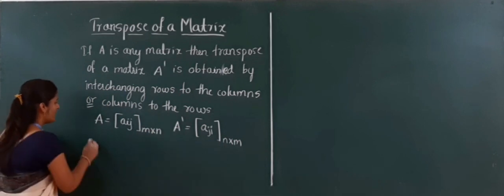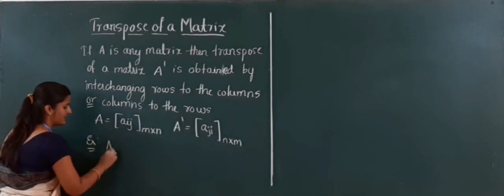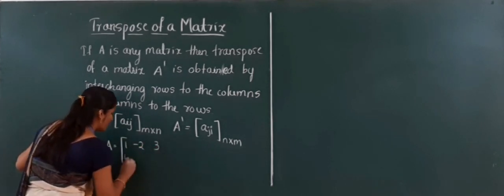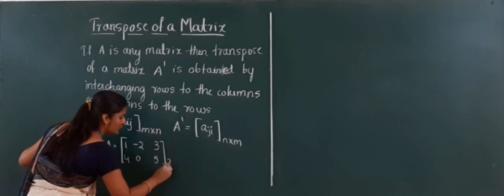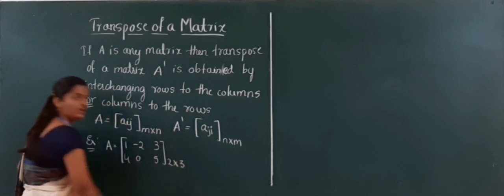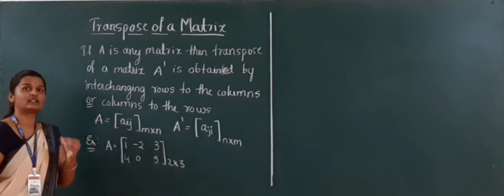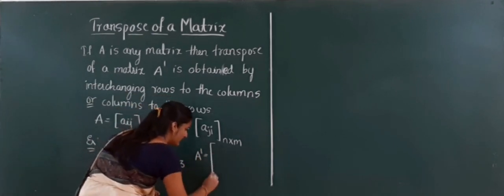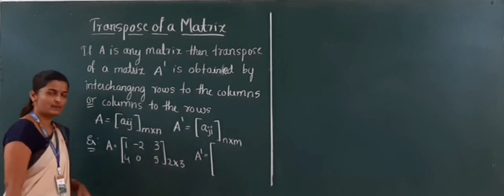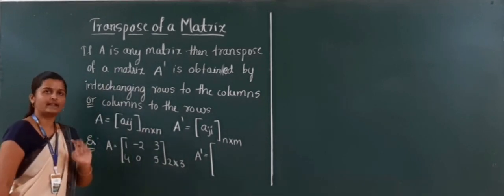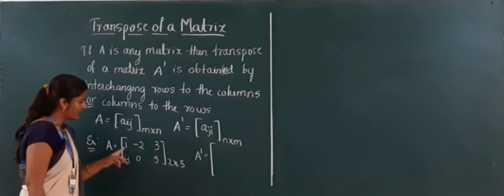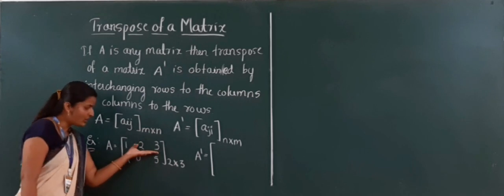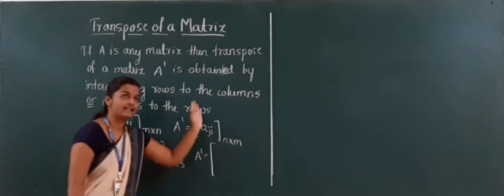For example, if there is a matrix with elements 1, minus 2, 3, 4, 0, 5 — a 2 by 3 matrix — then to write A dash, the transpose, I take the first row 1, minus 2, 3 and write the whole row as a column.